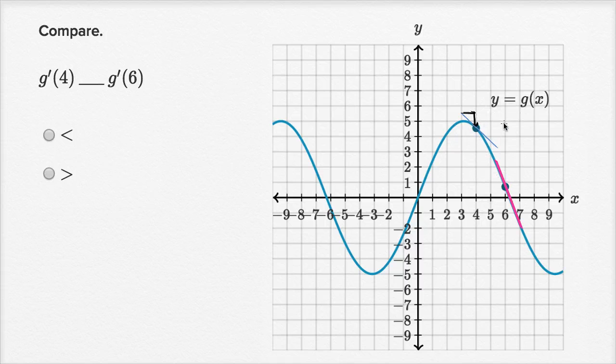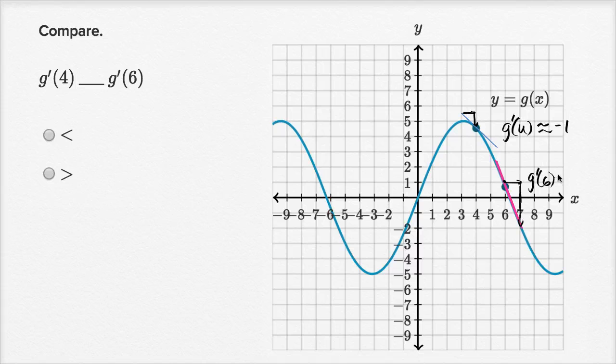So it looks like g prime of four, g prime of four, the derivative when x is equal to four, is approximately, I'm estimating it, negative one. While the derivative here, when we increase x, if we increase x by, if we increase x by one, it looks like we are decreasing y by close to three. So g prime of six looks like it is closer to negative three.